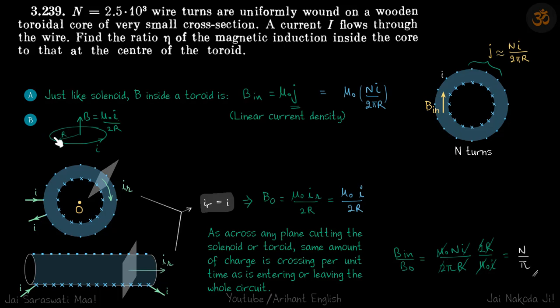Second thing we also know is if we have a loop, current carrying loop, then field at the center is μ₀i by 2r. So we will be using this result when we will calculate the field at the center.